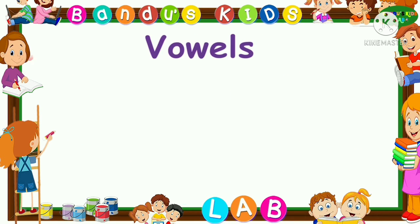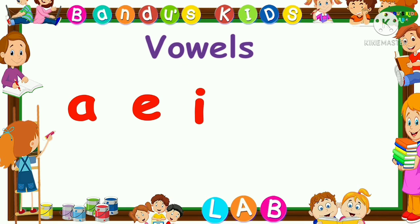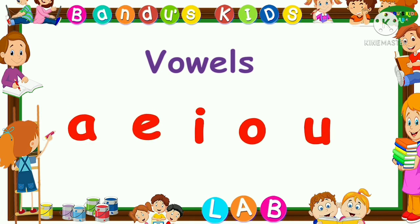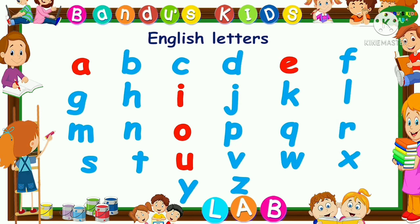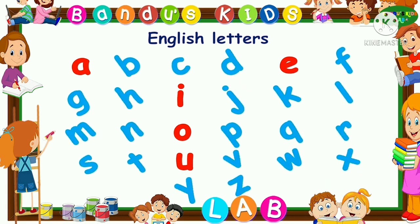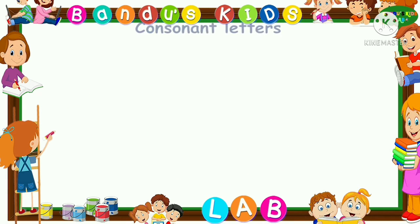Vowels and consonants: there are 26 letters in the English alphabet. The vowels are A, E, I, O, U. Except these vowels, the others are the consonant letters — there are 21 consonant letters. Now let's read the consonant letters.